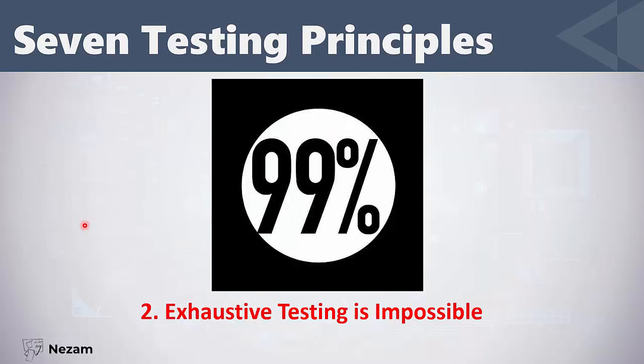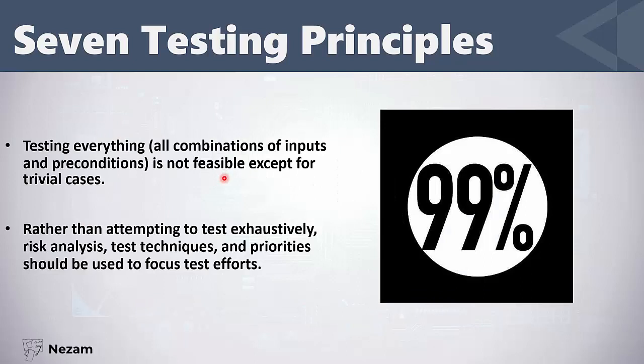The second principle is: exhaustive testing is impossible. Exhaustive testing means testing everything — all the combinations of inputs and all the pre-conditions in our systems. This is not feasible; it is impossible except for trivial cases, like a question with yes and no answers.